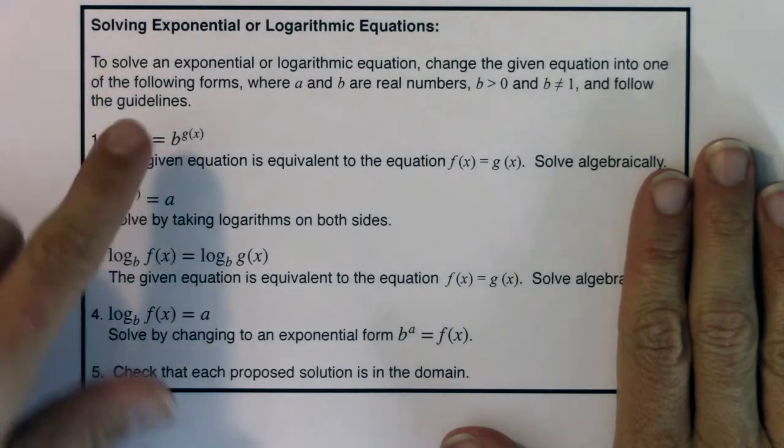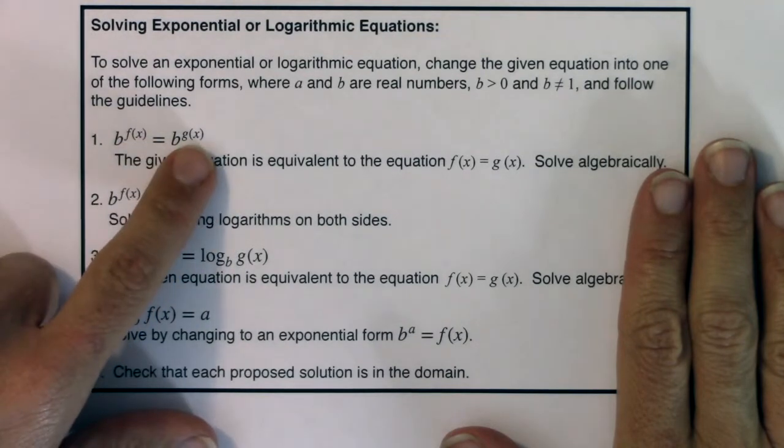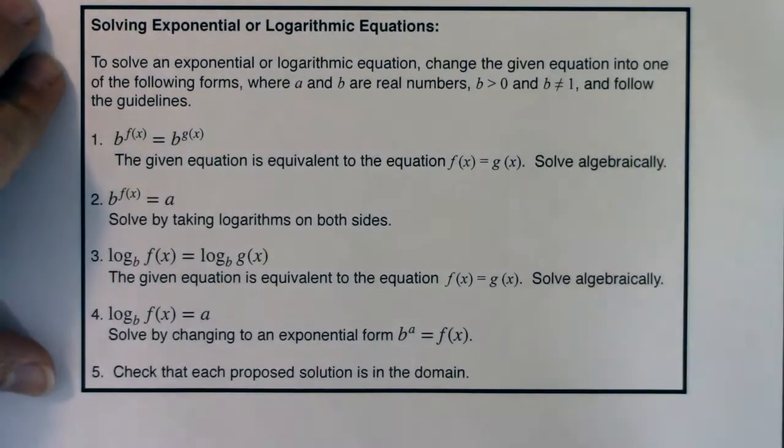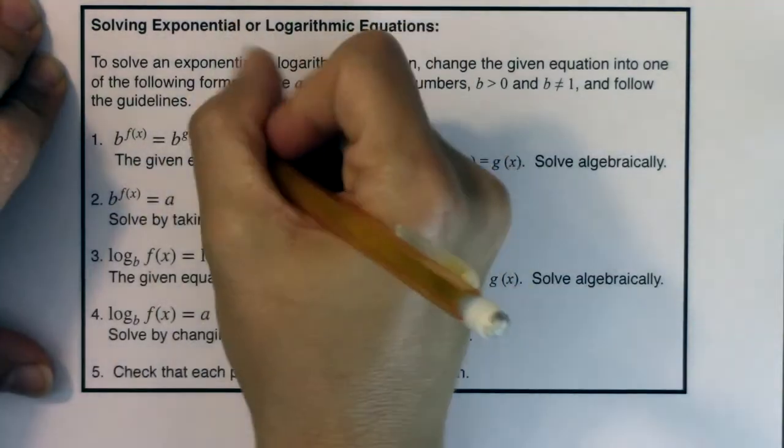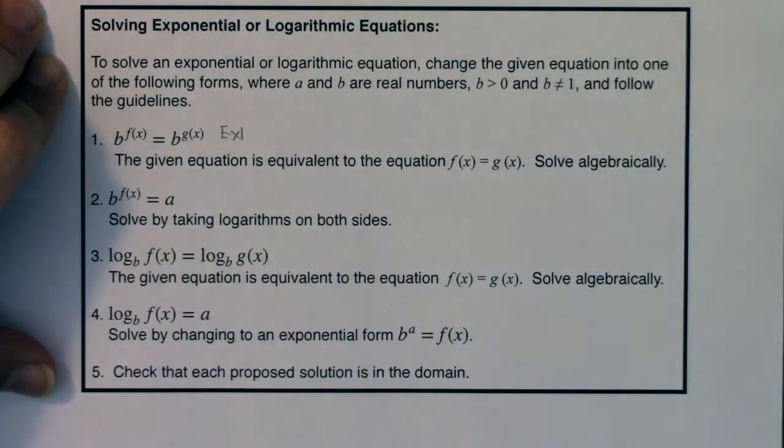If the bases of your power are the same, then the mechanics were to set the exponents equal to each other. And we saw that in example 1. Alright, so that was our very first example where we had powers whose bases were the same. So we set the exponents equal to each other.